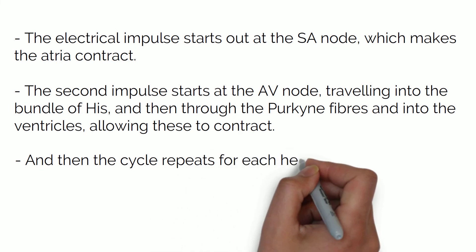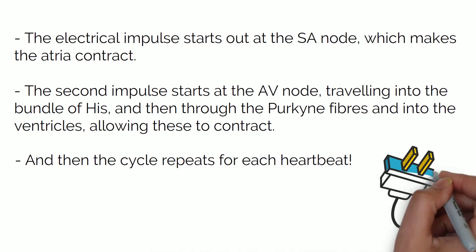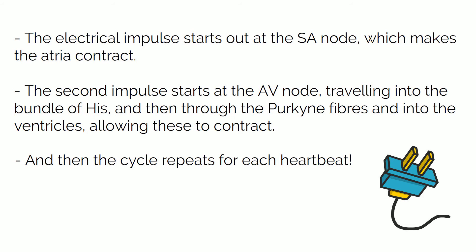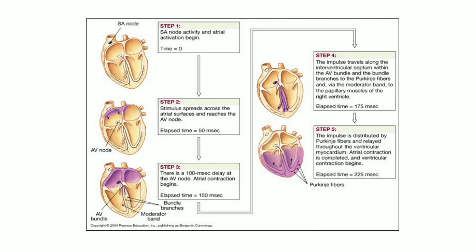This happens for every heartbeat — without these electrical impulses, your heart would simply stop working. The AV node branches out into what is called the bundle of HIS, which divides into two branches: one goes to the right ventricle and the other to the left ventricle. Each ventricle has Purkinje fibers, which contain specialized cells that help transmit the electrical impulse from the bundle of HIS into the ventricles. The electrical impulse starts at the SA node, which makes the atria contract. The second impulse starts at the AV node, traveling into the bundle of HIS, then through the Purkinje fibers and into the ventricles, allowing these to contract.